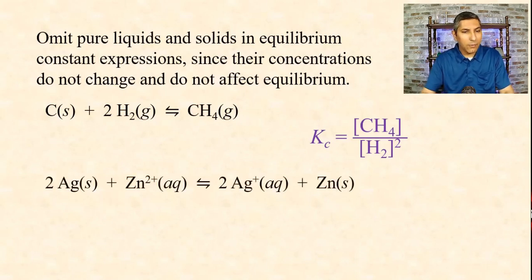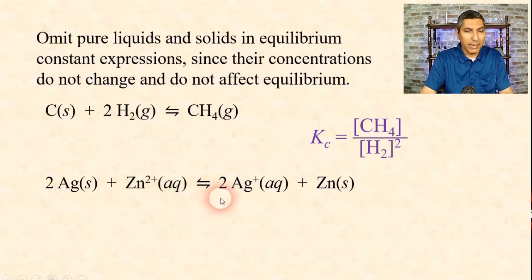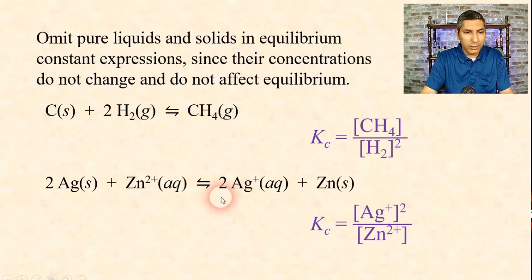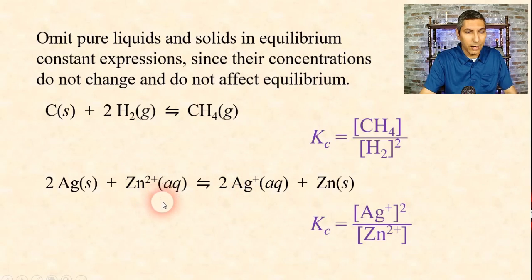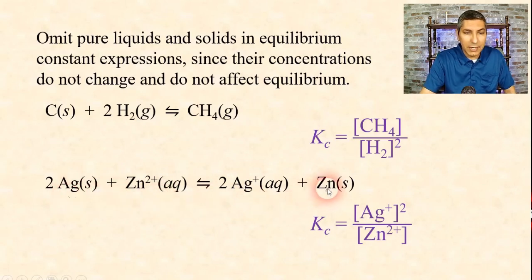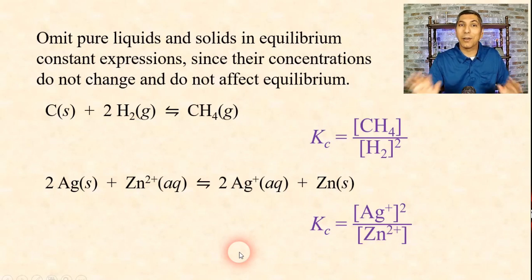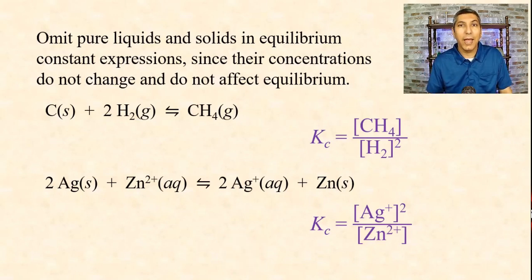Here's another one — we have some solids in this expression as well. Kc equals [Ag+] squared all over [Zn2+]. We leave out the solids: we leave out Ag and we leave out the Zn solid, because solids are not part of the equilibrium constant expression and are not part of our equilibrium calculations.